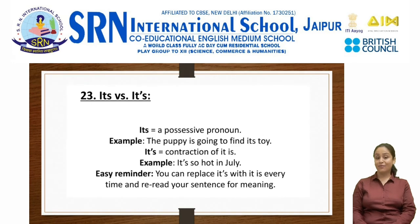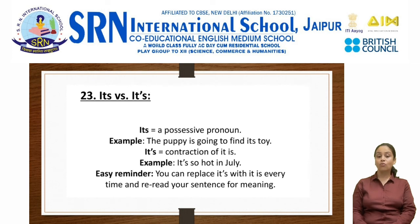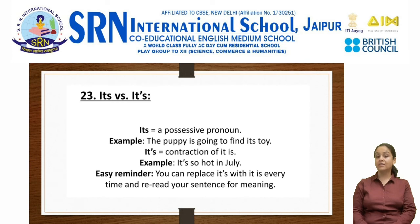Its versus it's. Its (without apostrophe) is a possessive pronoun. For example: the puppy is going to find its toy. It's (with an apostrophe) is a contraction of it is. For example: it's so hot in July, meaning it is so hot in July. An easy reminder: you can replace it's with it is every time and reread your sentence to check for meaning.